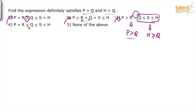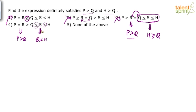In option 4, P equals R and R greater than Q, so P is greater than Q — first part satisfied. For the second part: Q is less than or equal to S, and S is less than H. The inequalities between Q and H are less than or equal and less than — the common part is less than. So Q is less than H, which means H is greater than Q. Both P greater than Q and H greater than Q are satisfied in option 4. That's the answer.